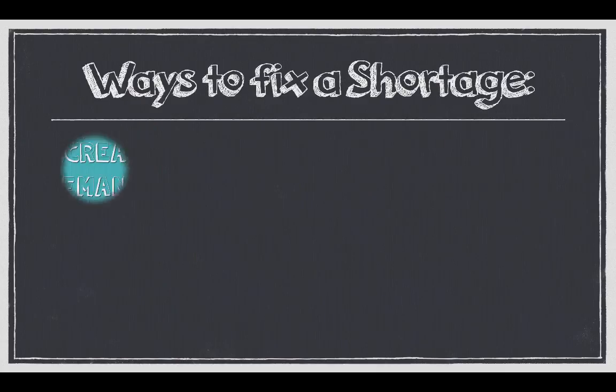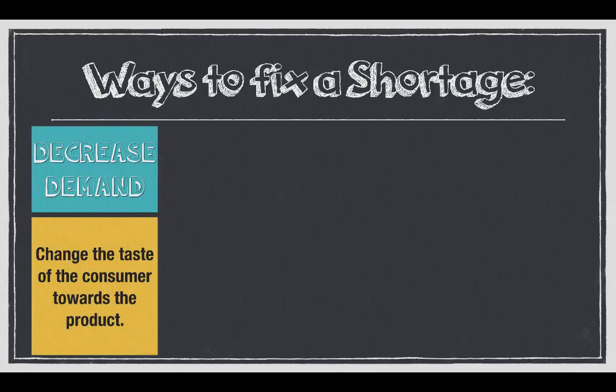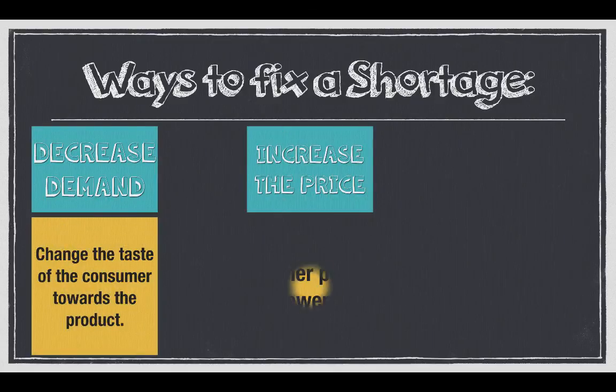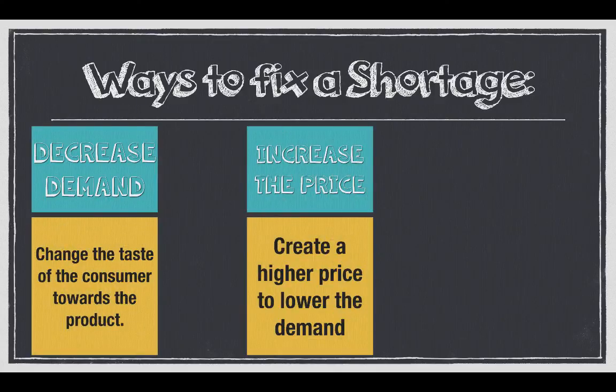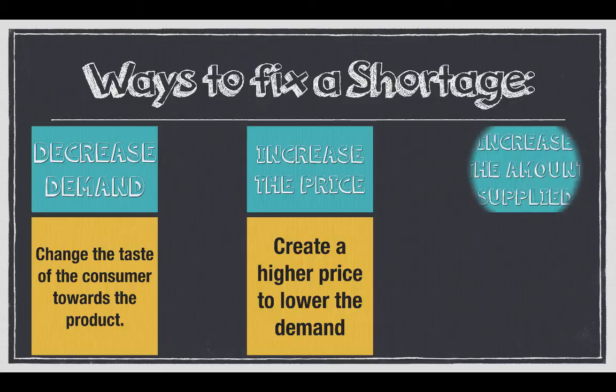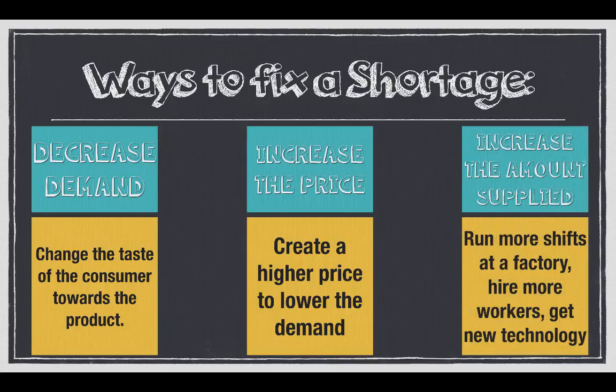Ways to fix a shortage include decreased demand — so change the taste of the customer — increase the price, create a higher price, and increase the amount supplied, maybe work more factory hours or whatever it might be.